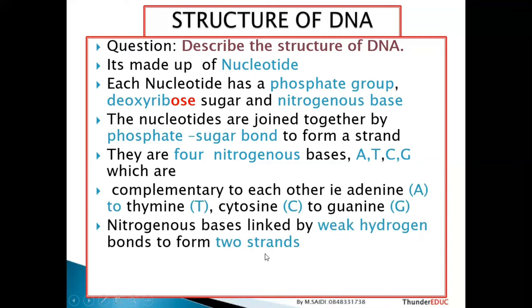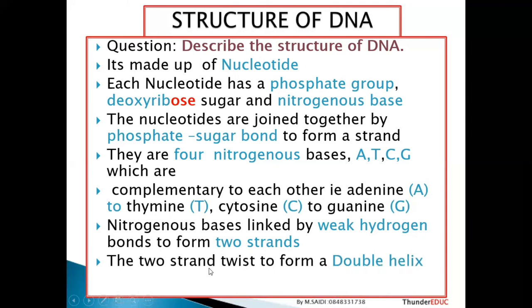The nitrogenous bases are linked together by weak hydrogen bonds to form two strands. These two strands coil or twist to form a double helix. That is essentially how you are supposed to describe the structure of DNA.